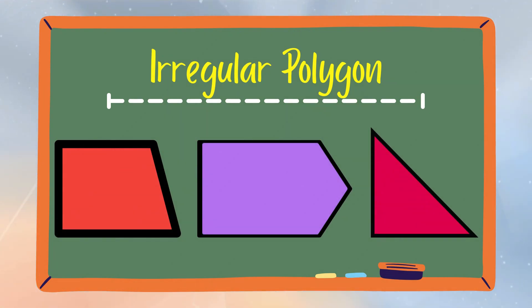Examples of irregular polygons are the quadrilateral, pentagon, and right-angled triangle on your screen.